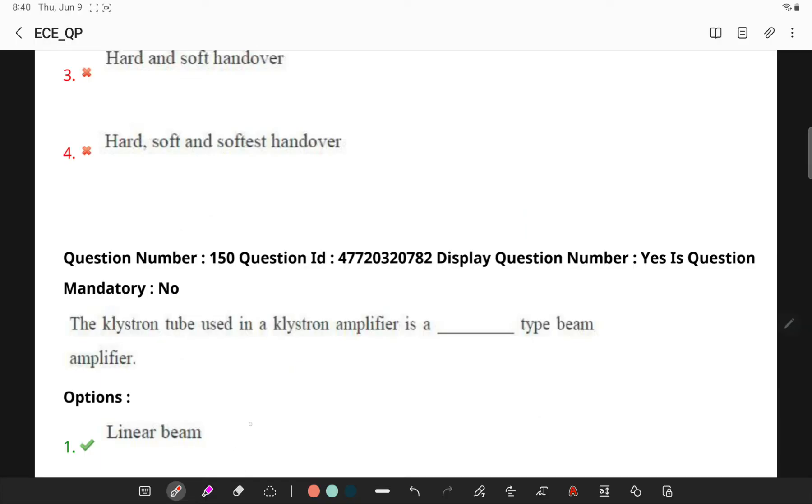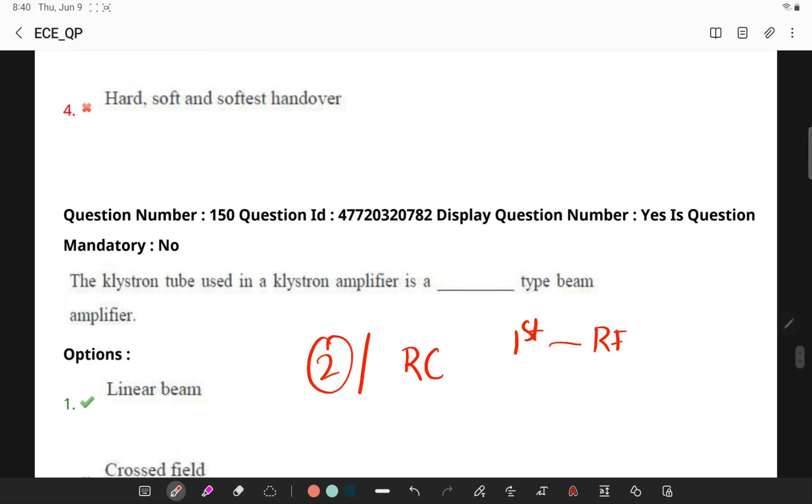In a klystron amplifier, the electron beam passes through two or more resonant cavities. The first cavity accepts the RF input and modulates the electron beam by bunching it into a high density and low density regions. Remember this.